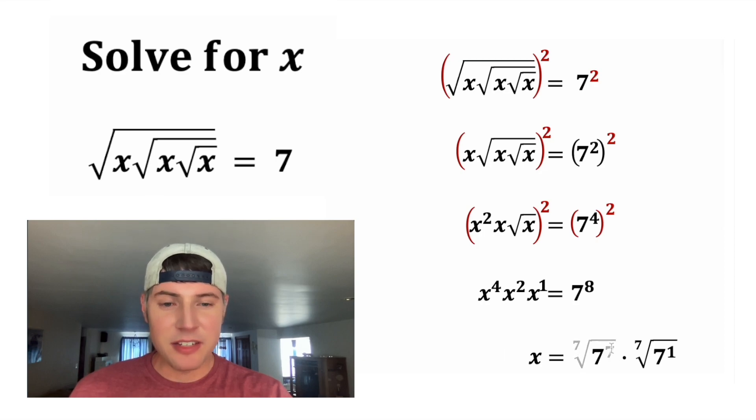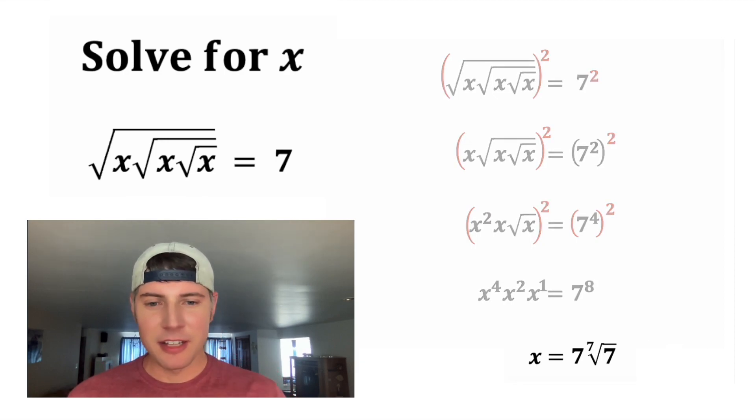And now we have the answer to our question. x is equal to 7 7th root of 7. Now let's put a box around it.